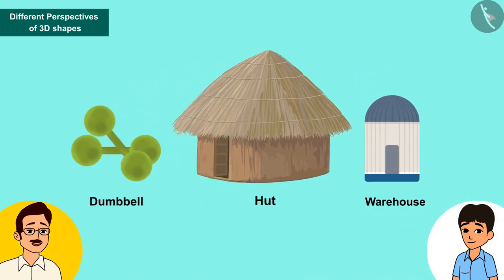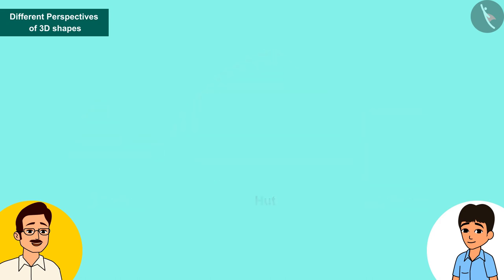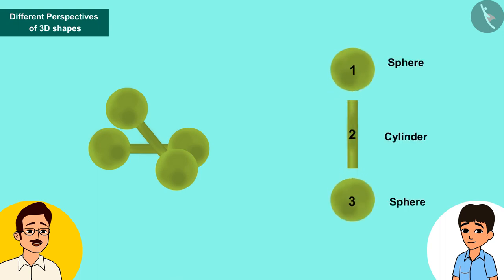But these are the names of these things. Let me tell you about shapes of these things. If you look at this dumbbell carefully, you will know that it is made with the combination of two spheres and a cylinder.